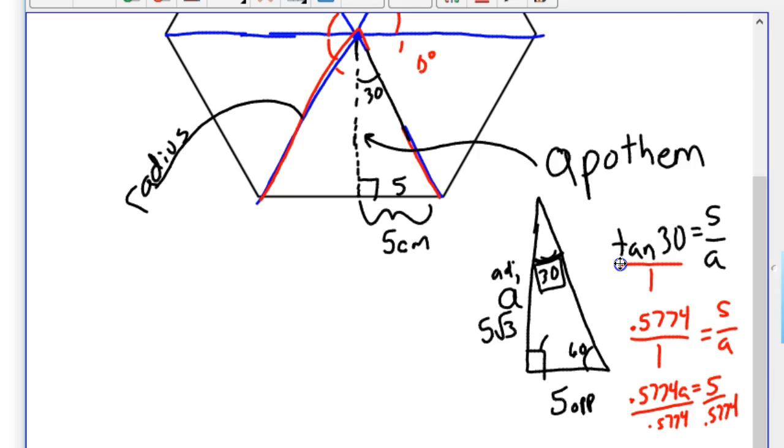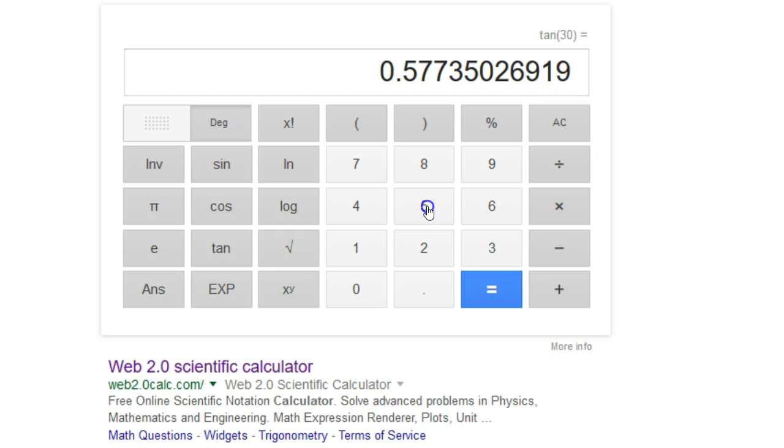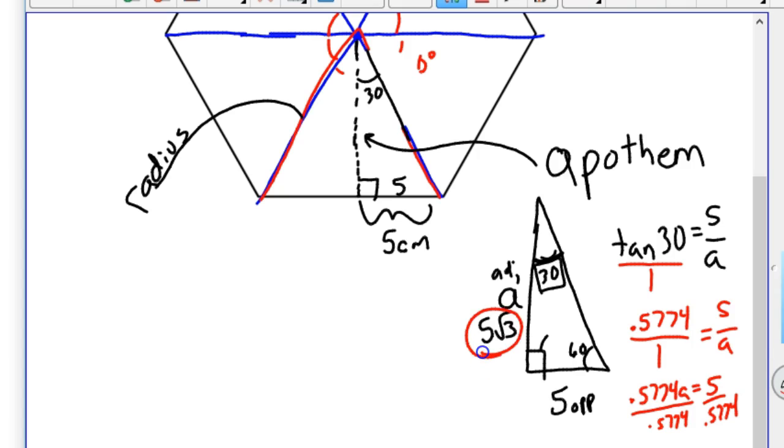Then divide by 0.5774 on both sides. And again, you could get out your calculator. There it is, 5 divided by 0.5774, or around 8.66. So this 5 root 3 is also the same as 8.66. So you could use that instead. I'm going to go ahead and use the 5 root 3, because college entrance exams want you to have this quickly. They're all built so that you wouldn't necessarily use a calculator.